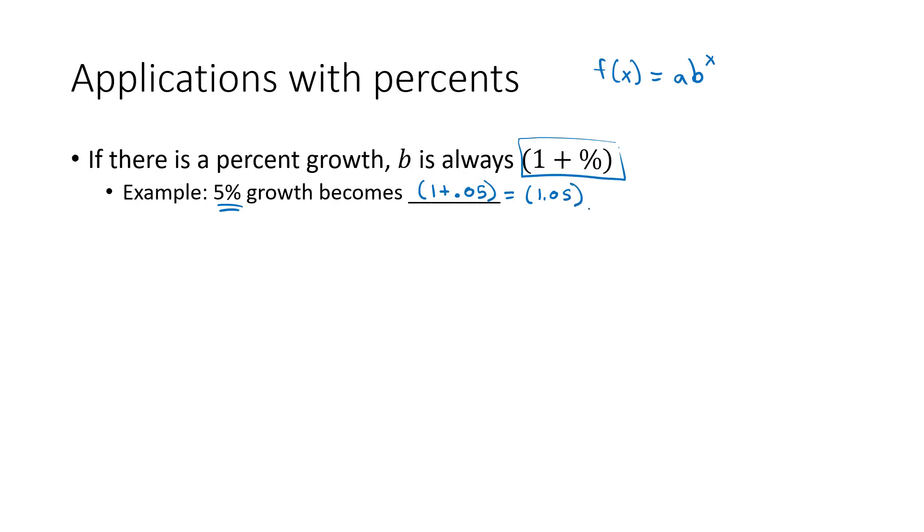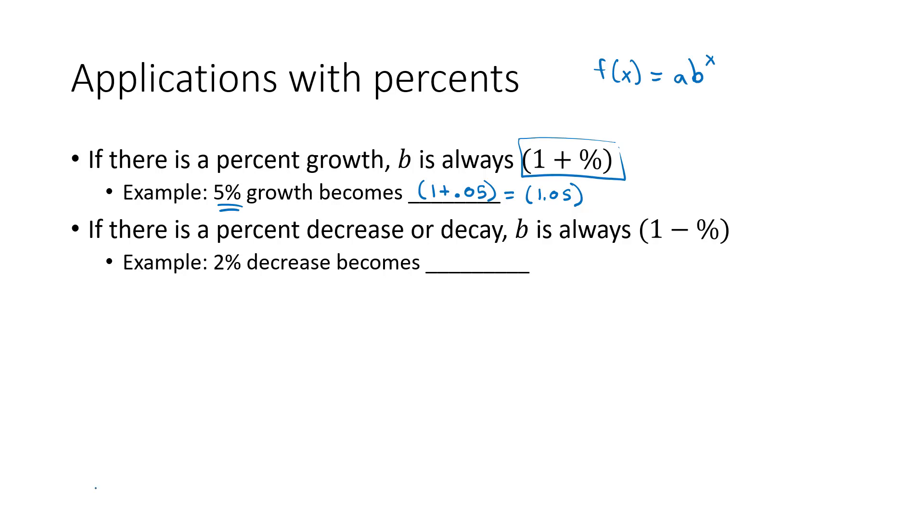So with a percent growth, we have to start with 1 plus whatever percentage grows. Very similar with percentage decay or percentage decrease, it's always going to be 1 minus that percentage decrease. So a 2% decrease would be 1 minus the 2% as a decimal 0.02. Or you could just write that as 0.98. With percentages increase or decrease, we always have to start with that 1 and then adjust for the increase or decrease.